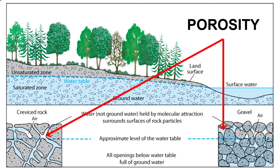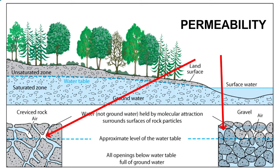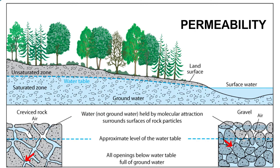The more porous a rock, the more water it can contain. However, just having space doesn't mean groundwater can get into that space or out of it. These spaces have to be connected in a way that allows water to flow between them. We call the level of connection between pore spaces permeability.